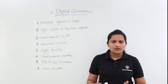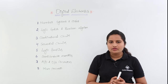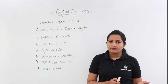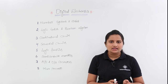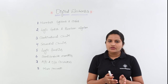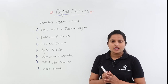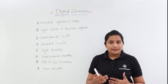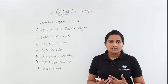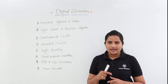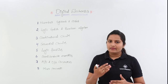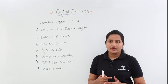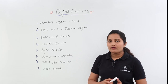Coming to logic families, we are going to discuss all bipolar logic families — that means RTL, TTL, DCTL, DTL and I²L. Coming to unipolar logic families, we are going to discuss PMOS, NMOS and CMOS, and how PMOS, NMOS and CMOS act as inverters, NAND gates and NOR gates — all these we are going to discuss under logic families.